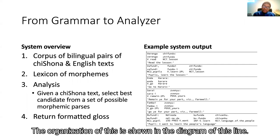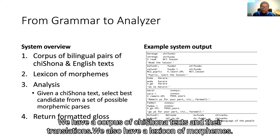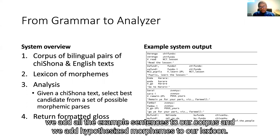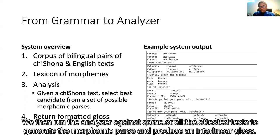The organization of the system is shown in the diagram of this slide. We have a corpus of texts shown with their translations. We also have a lexicon of morphemes. We start working on a new grammatical lesson, add all the example sentences to our corpus, and add hypothesized morphemes to our lexicon. We then run the analyzer against some or all of the test texts to generate the morphemic parse and produce an interlinear gloss.